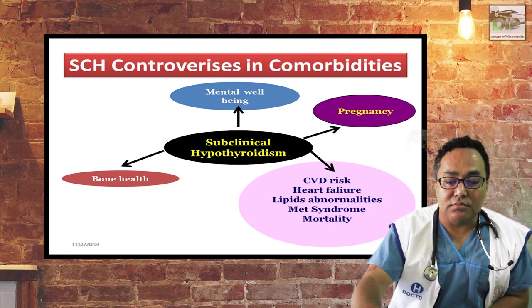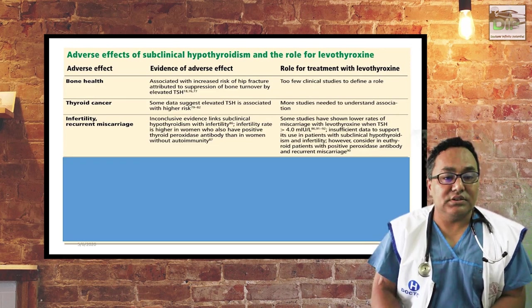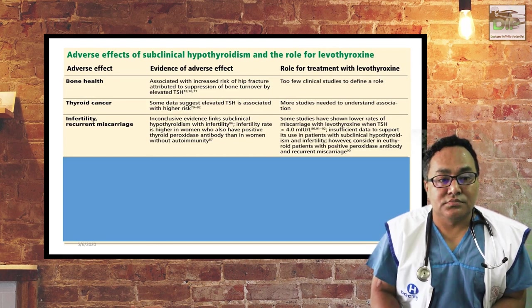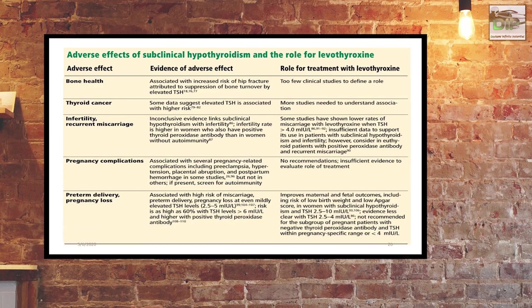Regarding the role of thyroxine treatment in subclinical hypothyroidism: patients with subclinical hypothyroidism are at more risk for bone fractures, but there are no definitive studies on whether to give thyroxine for bone health. For infertility and miscarriage, you have to treat the patient. Similarly, if there are pregnancy complications, pre-term delivery, or pregnancy loss, you have to treat the patient with subclinical hypothyroidism.